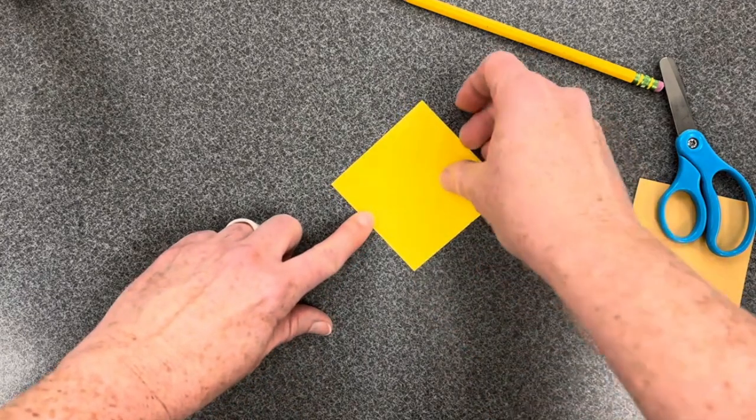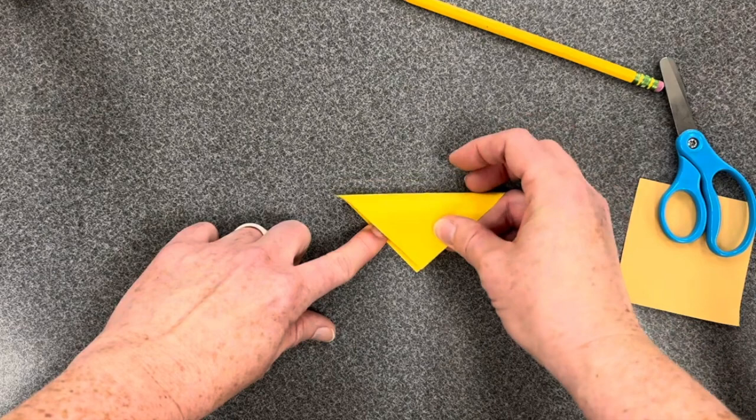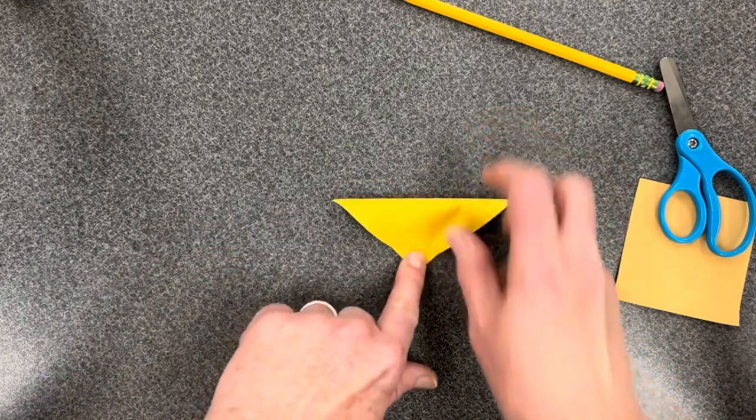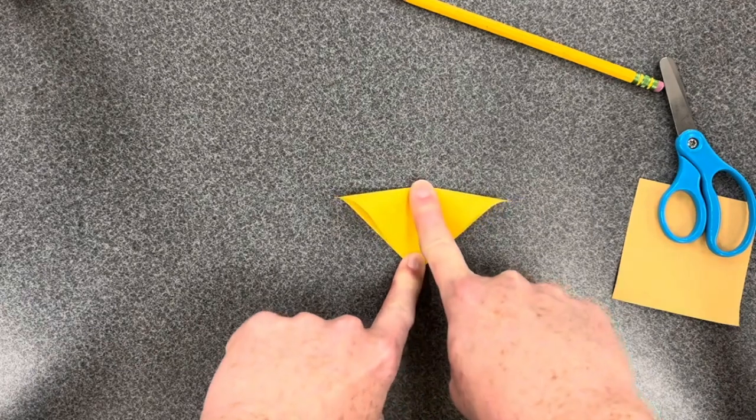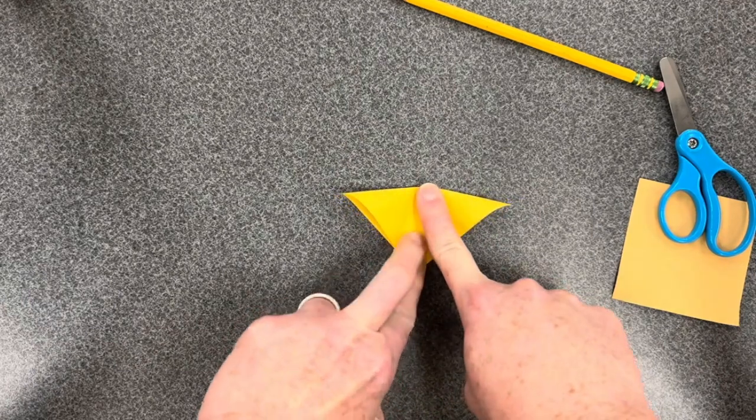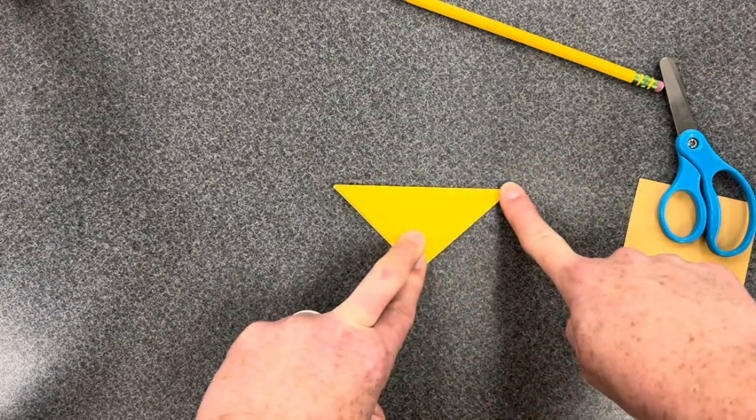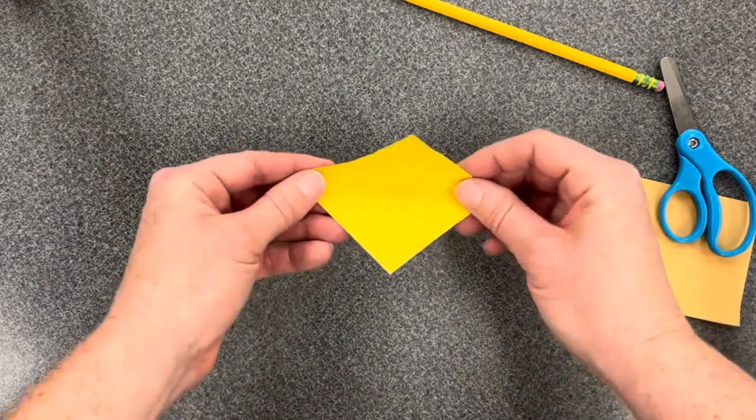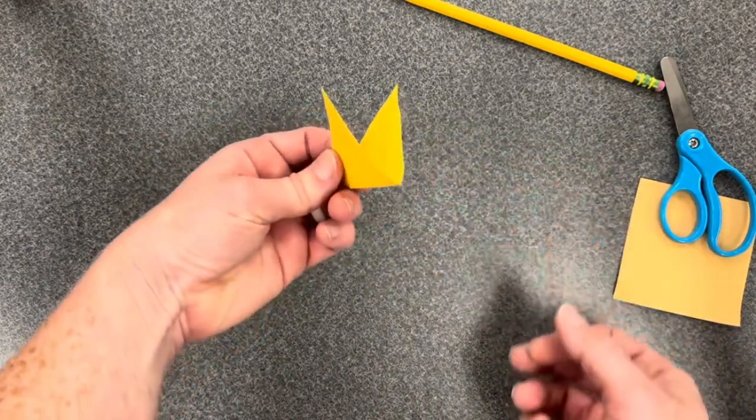So I'll use one finger to hold, and I'll use my other hand to bring the points together. Match up my bottom corners. I use one finger to squish down the middle, and then I press from one side and to the other to get a nice straight crease. If I've done this correctly, it should look like I have a little bird beak, or I like to think of it as a taco.